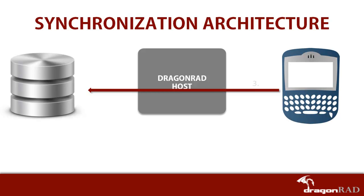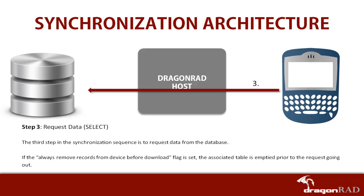The third step in the synchronization sequence is to request data. This is done with the select SQL statement. This request can be dynamic in nature, in which case fields from the current screen are sent to the Dragonrad host and mapped into the select SQL statement. Note that for fields to be sent during this phase, they must be bound to a table by setting the data table and data column properties.